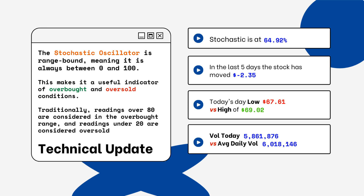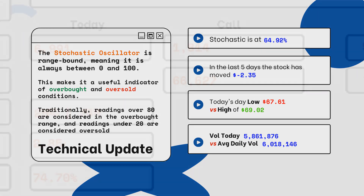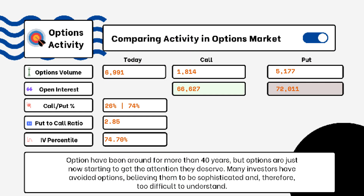We've also provided today's volume of shares traded and the average daily volume. You want to see how much volume is being traded and if it is above or below the average daily volume level. This tells you how relevant the move is from the stock today.